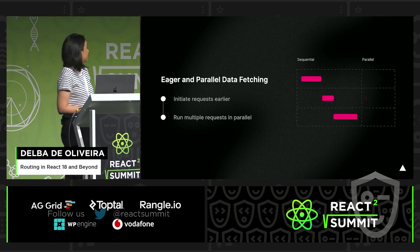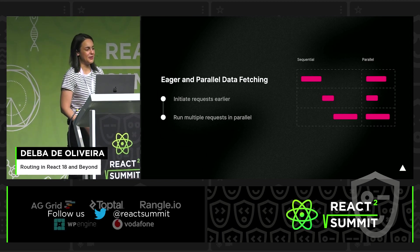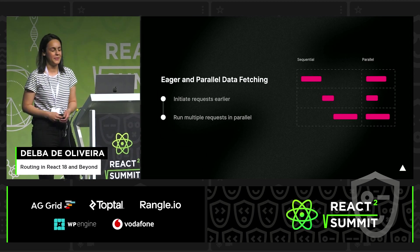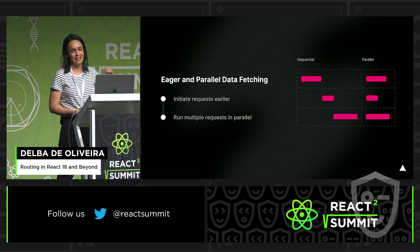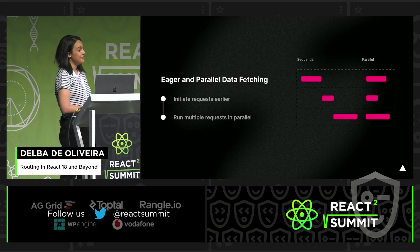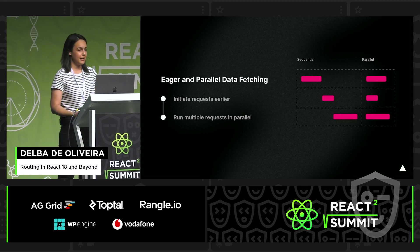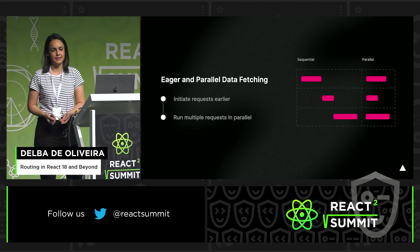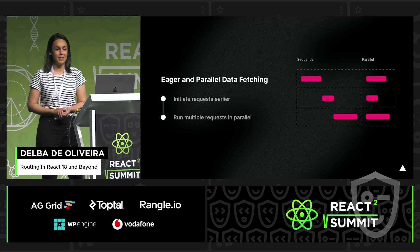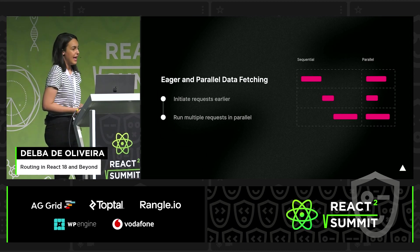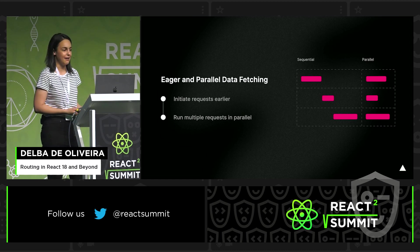Thirdly, we can have more granular control over data fetching. Currently in Next.js we fetch data at the page level, but with this new model we can fetch data at the segment level. And since we already moved data fetching outside of the rendering code, we can eagerly initiate those requests in parallel, which avoids waterfalls. Overall, the amount of time it takes to load the content of a route is also reduced.